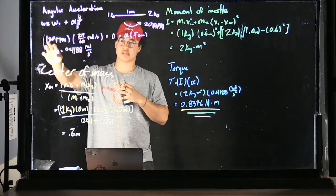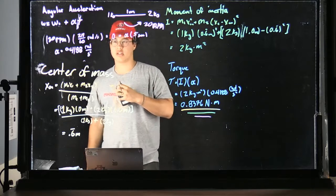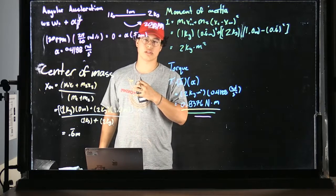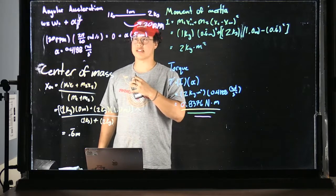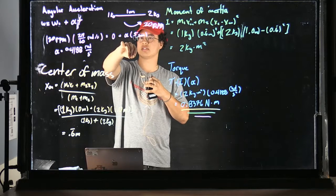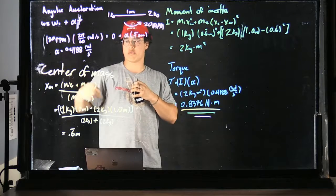And from the components, we can gather that you must convert 20 RPM into radians, and after doing so, divide it by the time taken to bring those balls to a halt. And after doing so, we find that the angular acceleration has equaled 0.4188 radians per second squared.